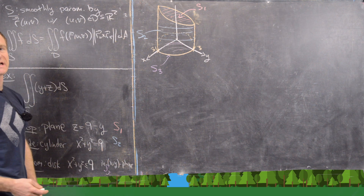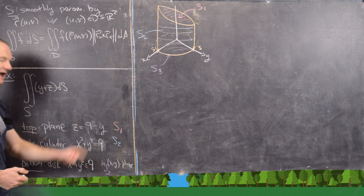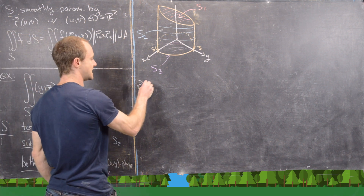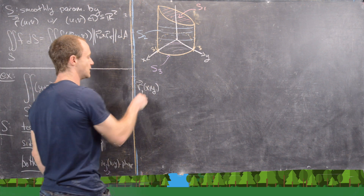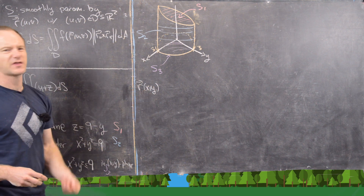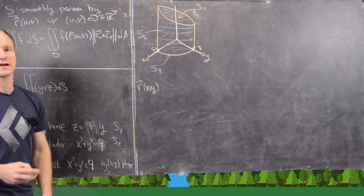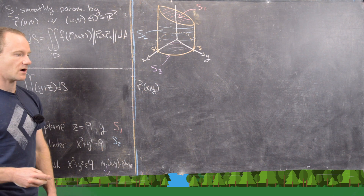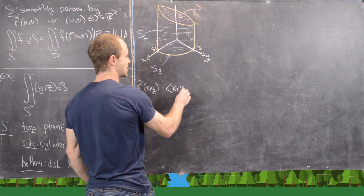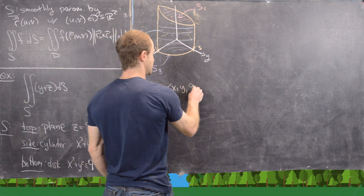Let's start with S1, which is the nicest because it's given by z as a function of x and y. So we take the parametrization R(x, y) = (x, y, 9 − y), since z = 9 − y.